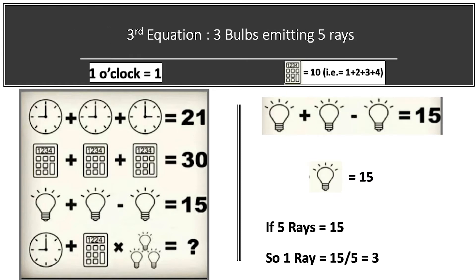Jumping to our third equation. We have 3 bulbs, each emitting 5 rays, and the equation's final value is 15. A minus sign is present, so two of the bulbs cancel out, leaving 1 bulb with 5 rays equal to 15. Therefore, 1 ray's value is 15 divided by 5, which equals 3.